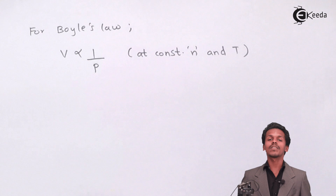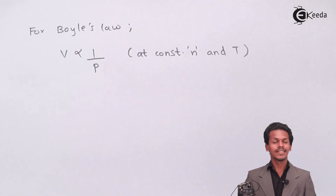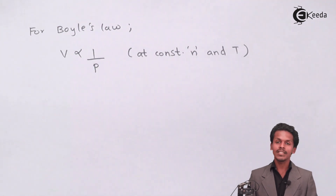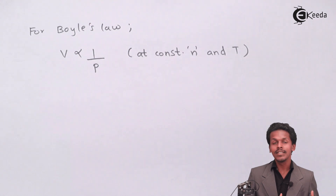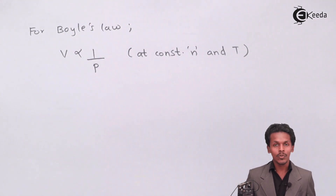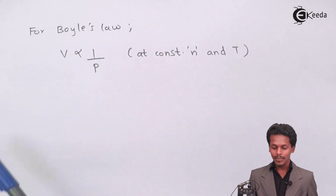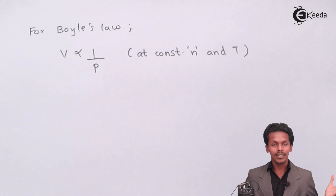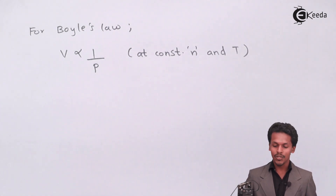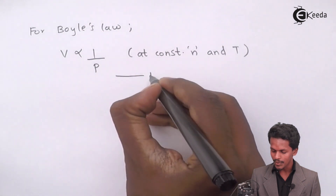Here, n number of moles of the gas is kept constant, and temperature is also kept constant. According to Boyle's Law, when we increase the volume, the pressure is reduced; or if we increase the pressure, the volume is reduced. So they are inversely proportional to each other. We will call this Equation 1.